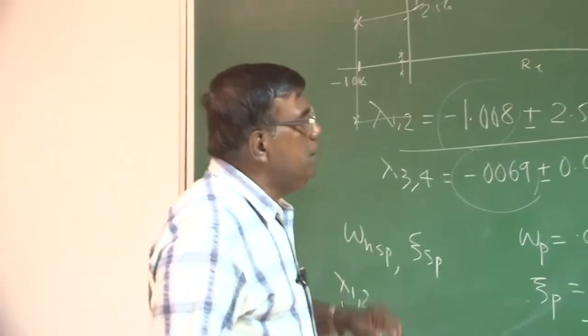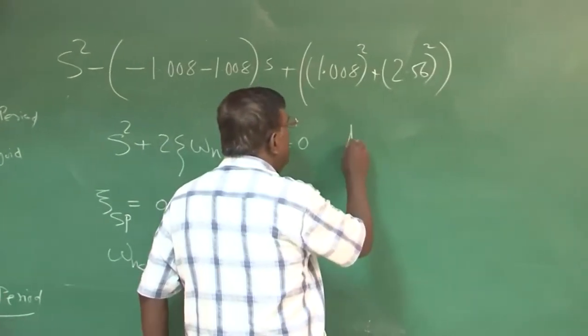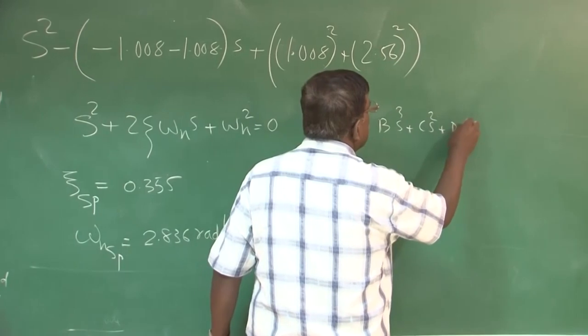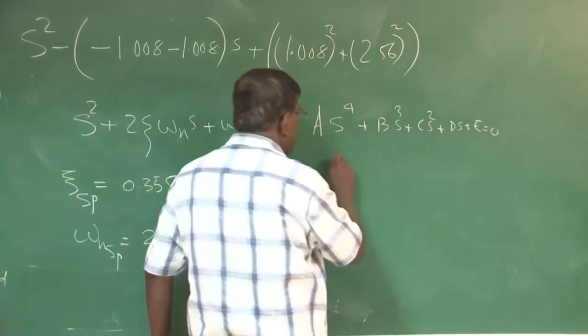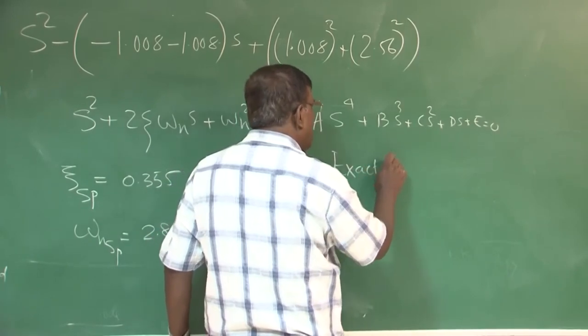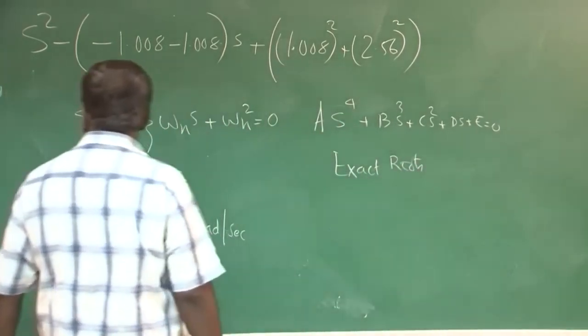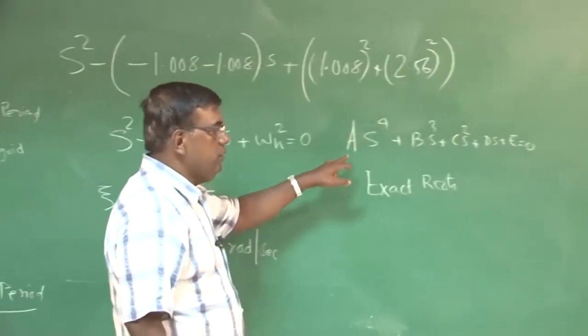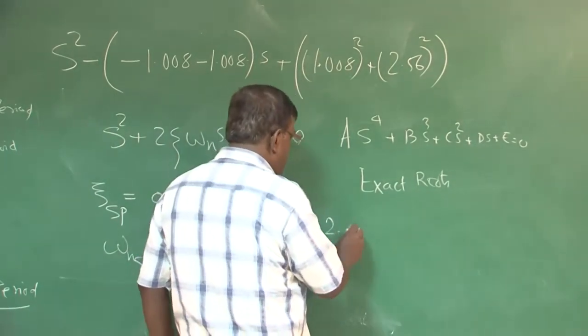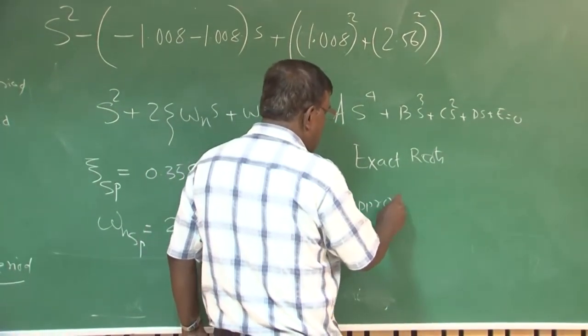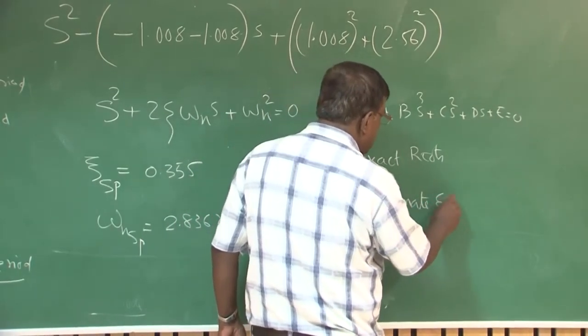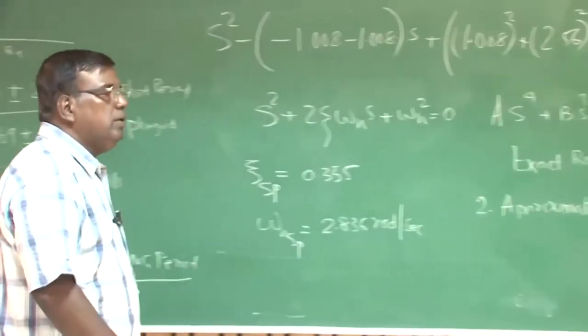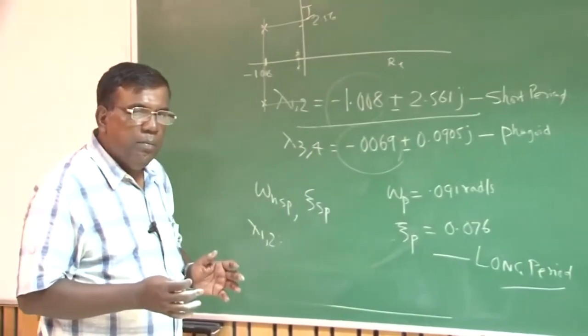Whatever roots we are getting here through As⁴ + Bs³ + Cs² + Ds + E equal to 0, we will call them exact roots, because they have been obtained by solving this exact equation.